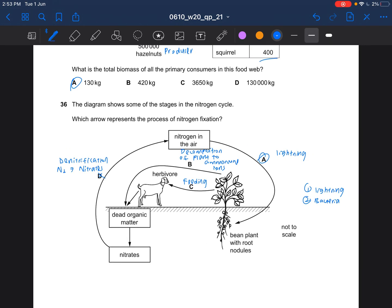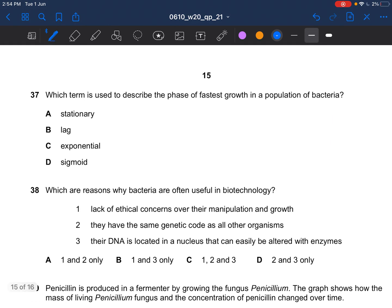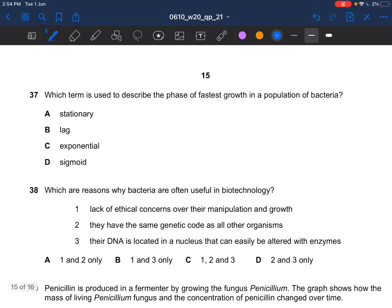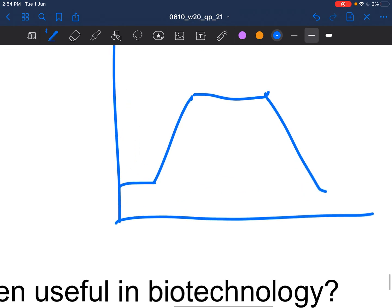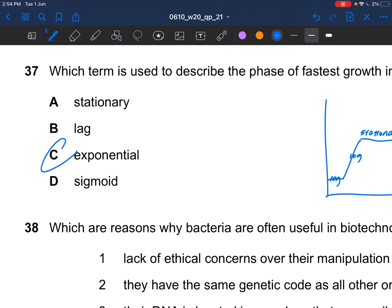Next question. Which term is used to describe the fastest phase of growth in the population of bacteria? That would be your exponential phase. And the graph looks something like this. This is your lag, this is your exponential, this is your stationary, this is the death phase. At your exponential phase the birth rate is greater than the death rate.